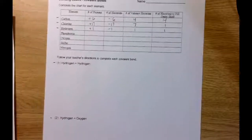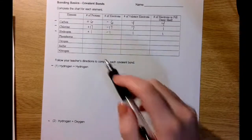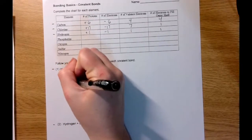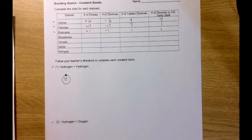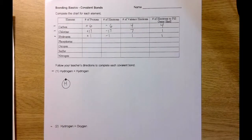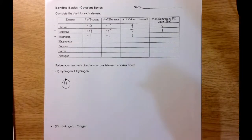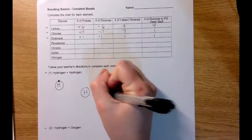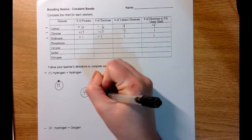Moving on to drawing covalent bonds — we'll draw the first one between hydrogen and hydrogen. Hydrogen has 1 valence electron, so if we were to draw the model of a hydrogen atom, we would have hydrogen with 1 electron on its first orbital. Here we are creating a covalent bond between 2 hydrogen atoms. A hydrogen atom has 1 valence electron and it's looking for 1 more to complete its outer shell. The covalent bond between 2 hydrogen atoms would look like this — the first hydrogen with 1 valence electron, the second hydrogen with 1 valence electron.